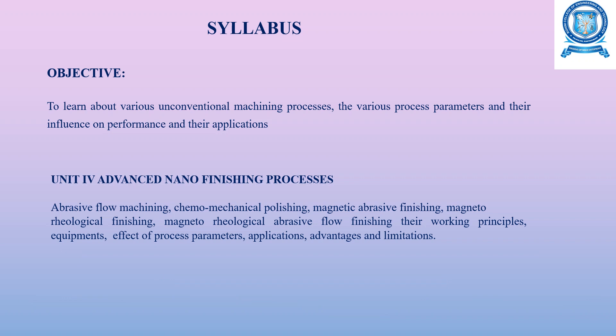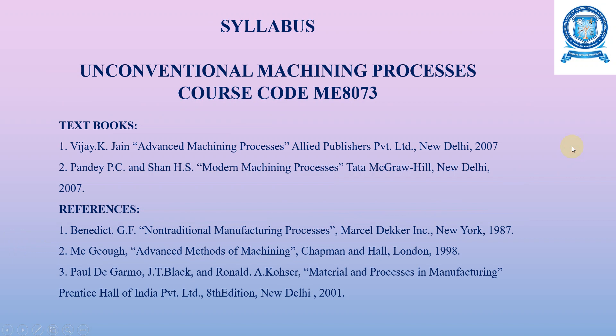The syllabus for the fourth unit — advanced nano finishing process — covers abrasive flow machining, chemo-mechanical polishing, magnetic abrasive finishing, magnetorheological finishing, and magnetorheological abrasive flow finishing, including their working principles, equipment, effect of process parameters, applications, advantages, and limitations. These are the textbooks and reference books for this unconventional machining process course.